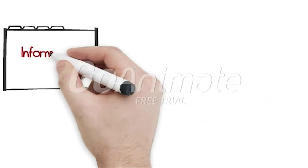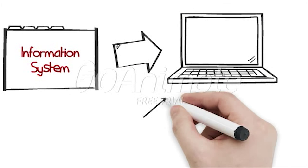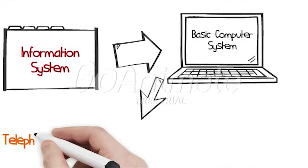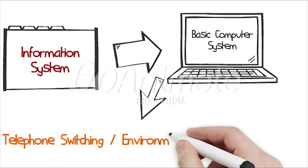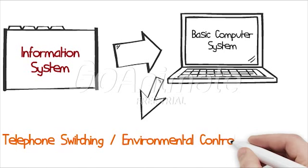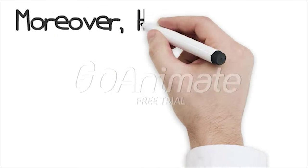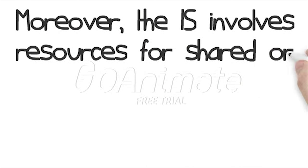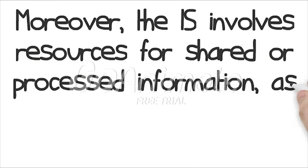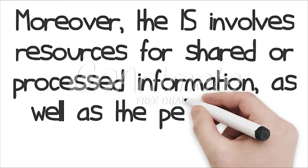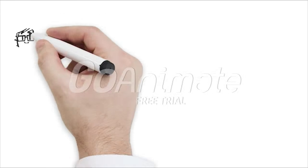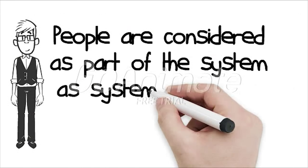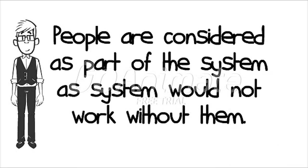An information system commonly refers to a basic computer system but may also describe a telephone switching or environmental controlling system. Moreover, the information system involves resources for shared or processed information, as well as the people who manage the system. People are considered part of the system as the system would not work without them.